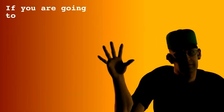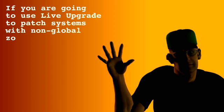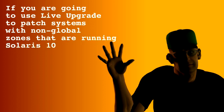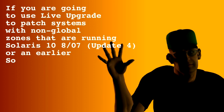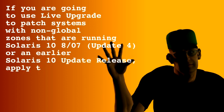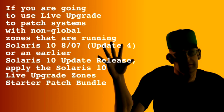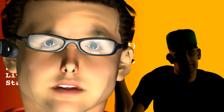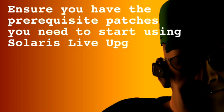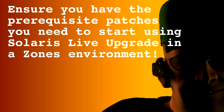The last best practice is: if you are going to use Live Upgrade to patch systems with non-global zones that are running the Solaris 10 8/07 release, Update 4, or an earlier Solaris 10 update release, you need to apply the Solaris 10 Live Upgrade Zones Starter Patch Bundle to your system. Installing this patch bundle will patch the system up to the level required to enable use of Live Upgrade in a basic zones environment.